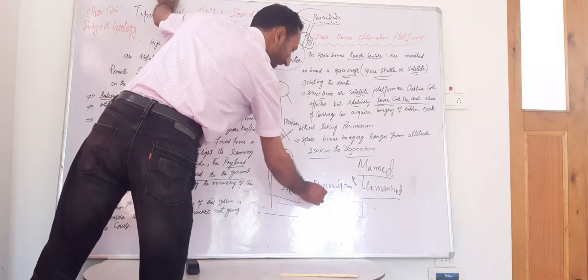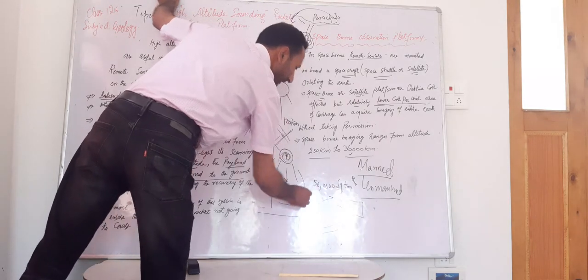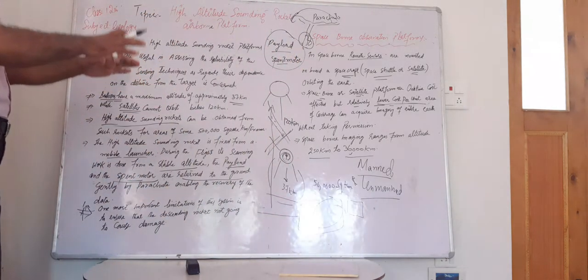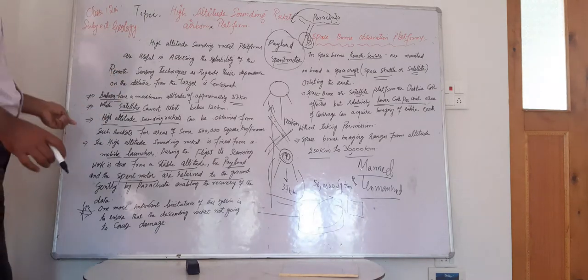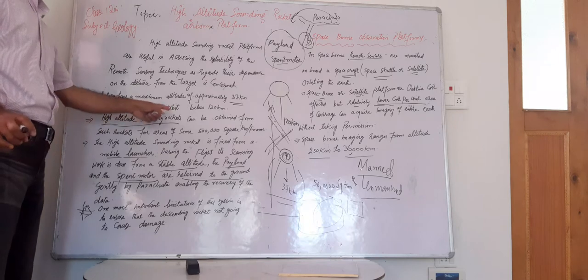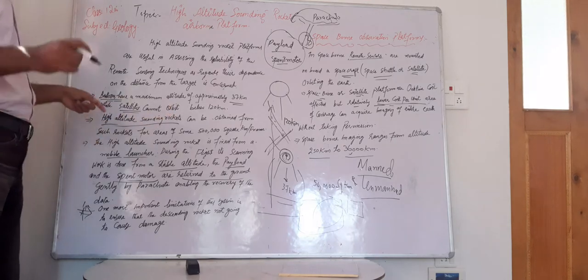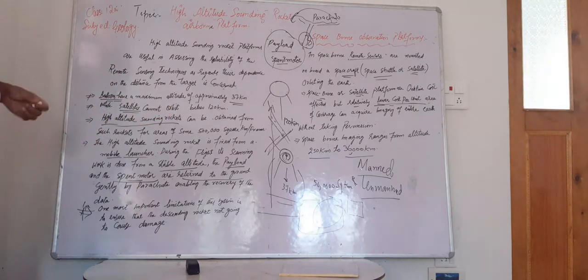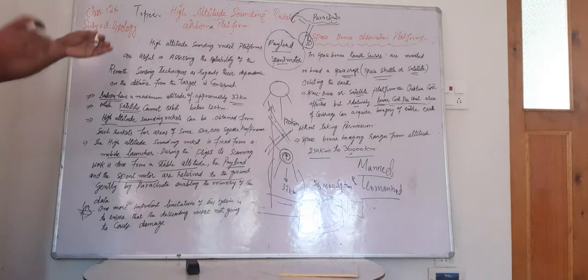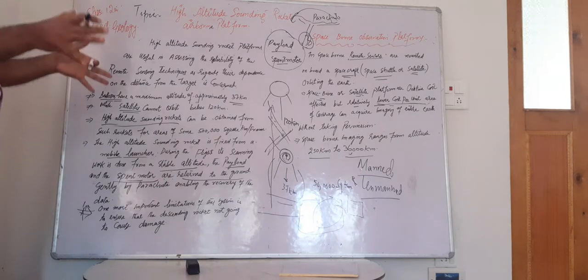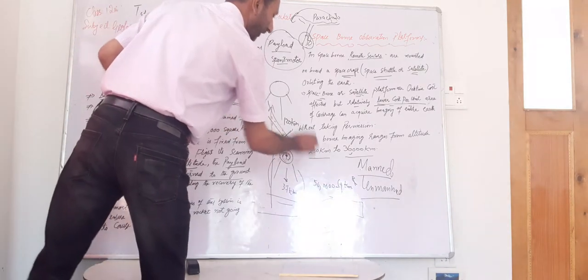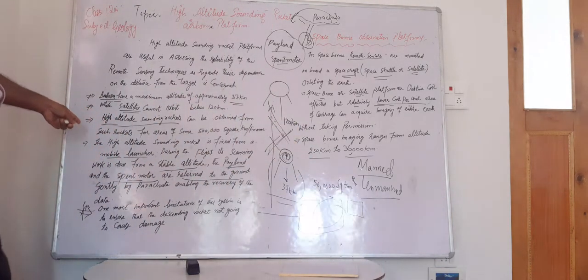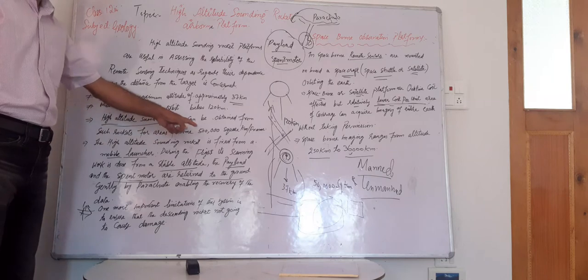In other words, up to a distance of five lakh square kilometers area, these high altitude sounding rockets can obtain the information. Such a frame can be of any geometrical shape, but the distance in square kilometers is up to five lakh.